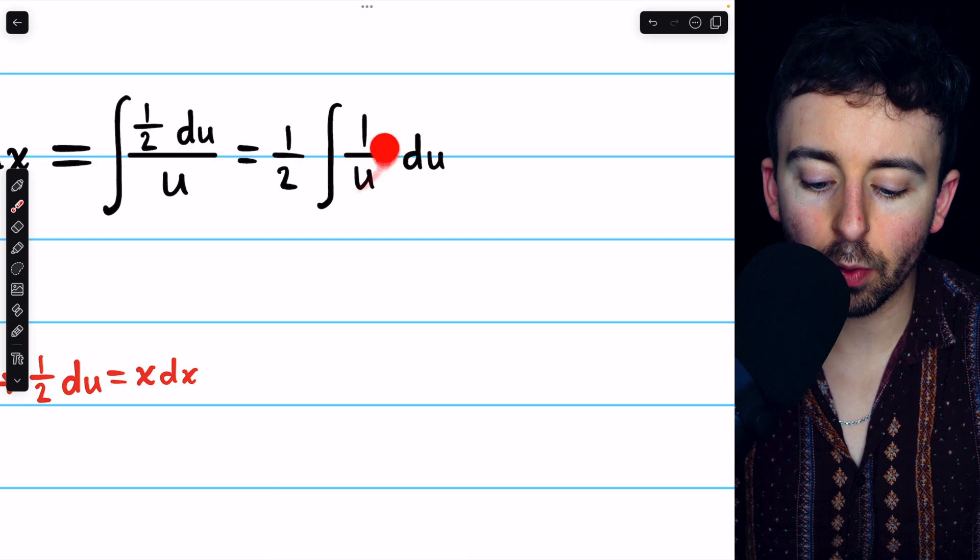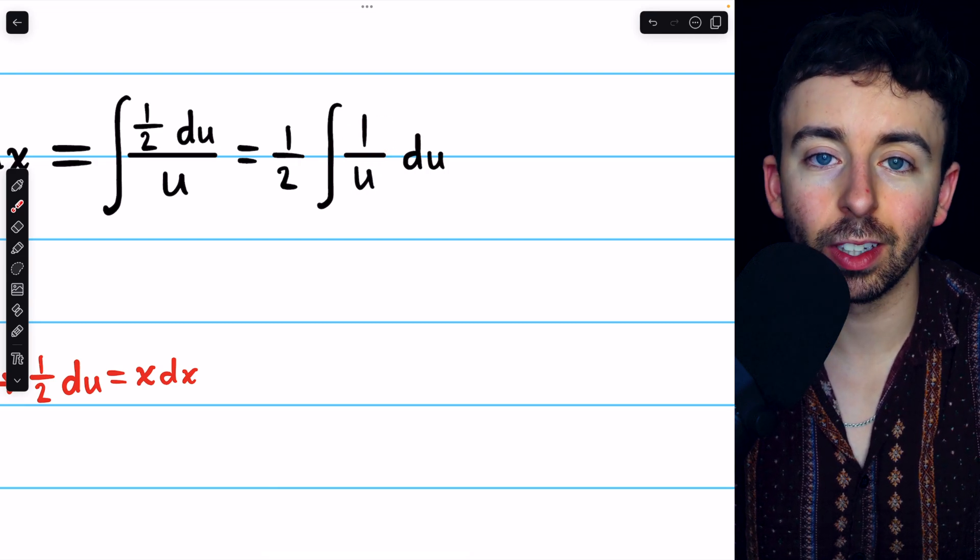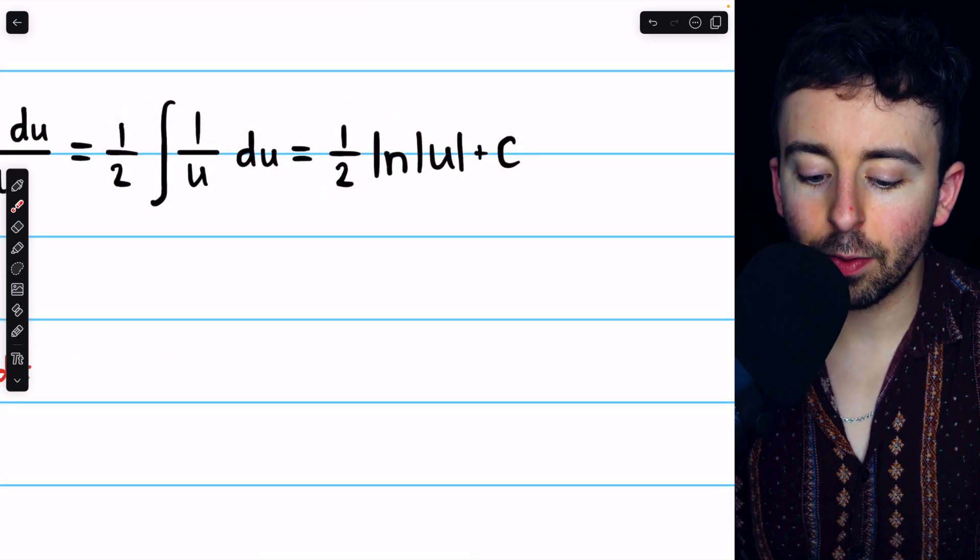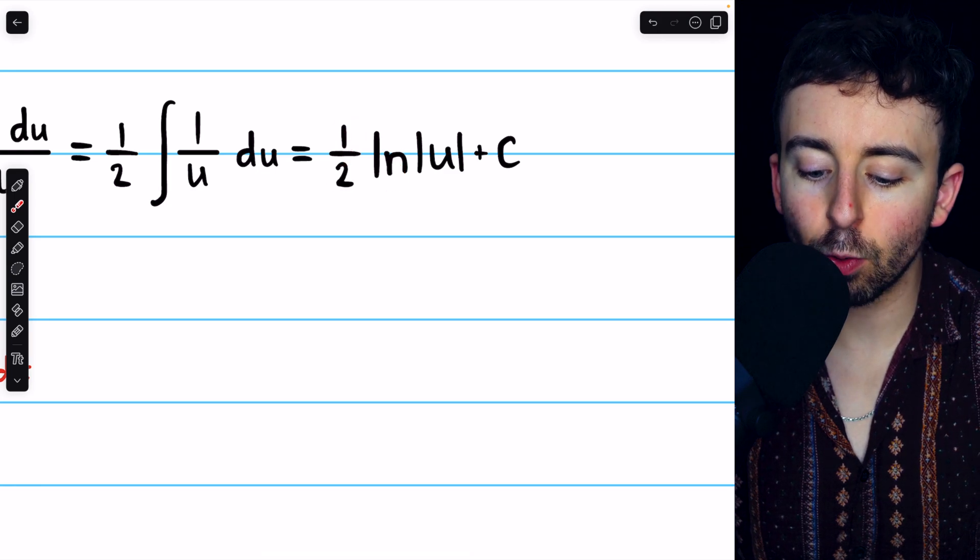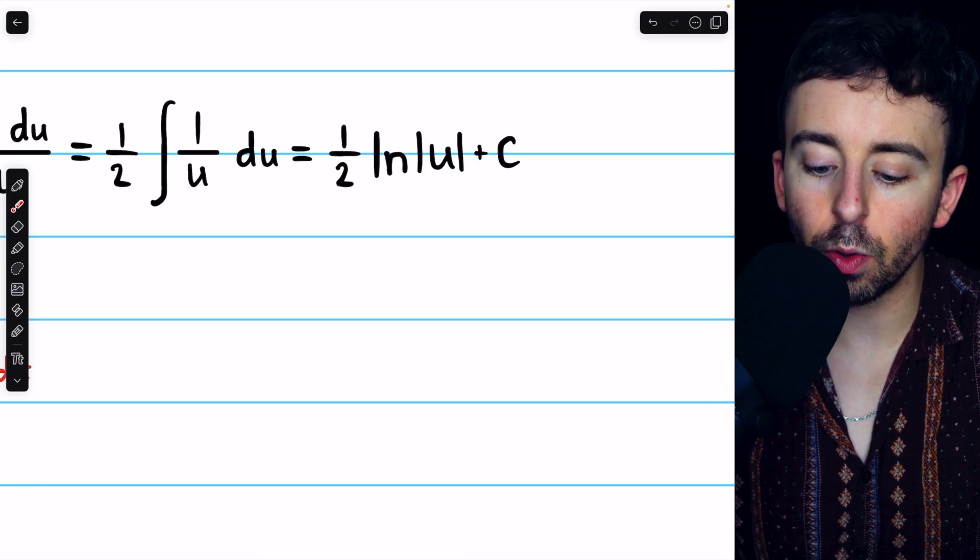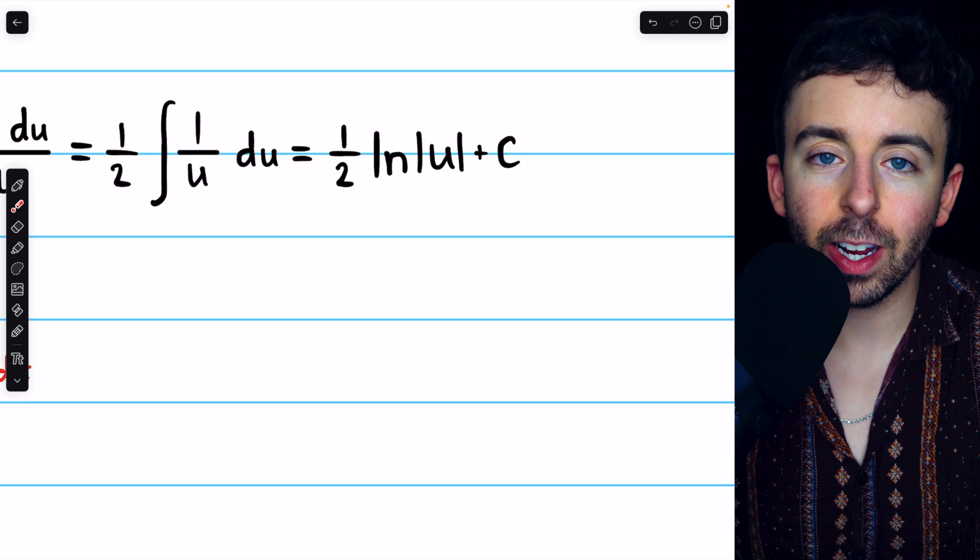The integral of 1 over u is just the natural log of u. Don't forget that factor of 1 half. So we have 1 half times the natural log of the absolute value of u plus the arbitrary constant.